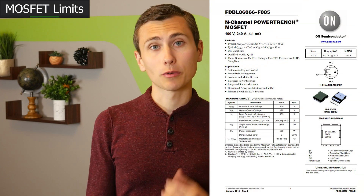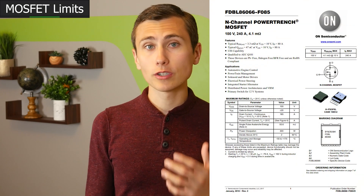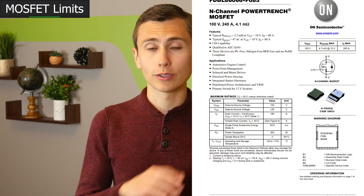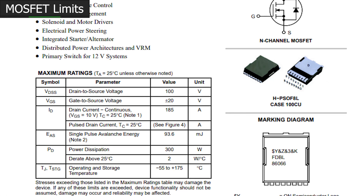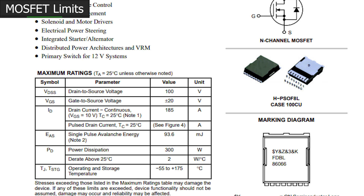These hard limits include the gate-to-source voltage rating, the drain-to-source voltage rating, and the safe operating area of the part. The gate-to-source voltage rating reflects how much voltage can be safely applied while turning on the transistor before it breaks. If this limit is exceeded, MOSFETs typically fail short circuit — that is, the MOSFET will behave like it's permanently stuck on.